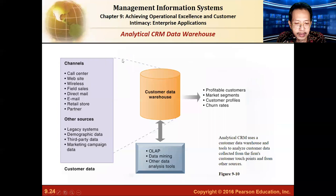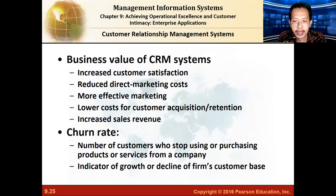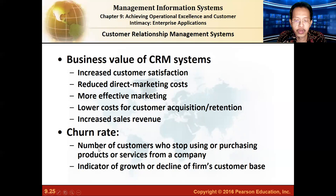Data from different channels goes into a data warehouse and is processed using various methods. The business value of CRM includes increased customer satisfaction, lower costs, greater effectiveness, and increased sales. Another key metric is churn rate — the number of customers who stop using your products. You want to lower the churn rate. CRM helps identify high-value, high-loyalty customers for special service, and assigns agents to engage customers at risk of churning.